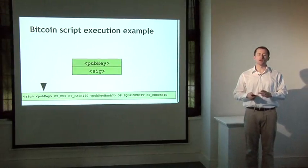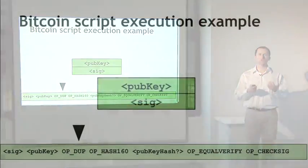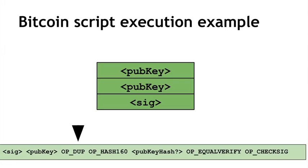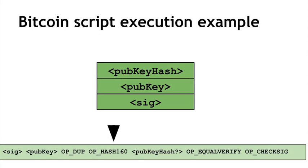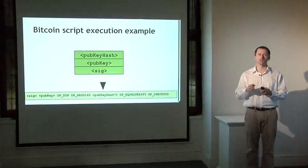After we've pushed those two values onto the stack, we start executing the second half of the script — the script-pubkey component specified by the sender of the coins. The OP_DUP instruction takes the value on top of the stack, pops it off, and writes two copies back, duplicating the public key. The next instruction, HASH160, takes the top value on the stack and computes a cryptographic hash of it, converting the public key into a hash of the public key. Then we do one more push of data — the public key hash that the sender specified must be used to redeem these coins.